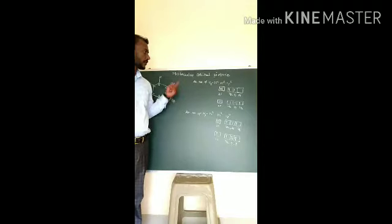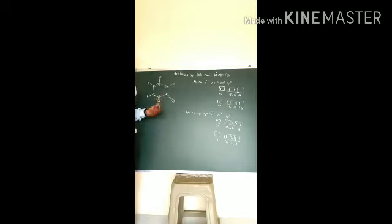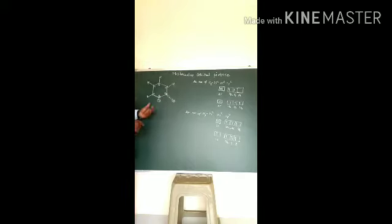Let me see friends, the molecular orbital picture of pyridine. As we have already discussed, pyridine is a planar molecule which is a colorless liquid. All the atoms in pyridine are in the state of sp2 hybridization, and it is a nitrogen-containing six-membered ring compound.